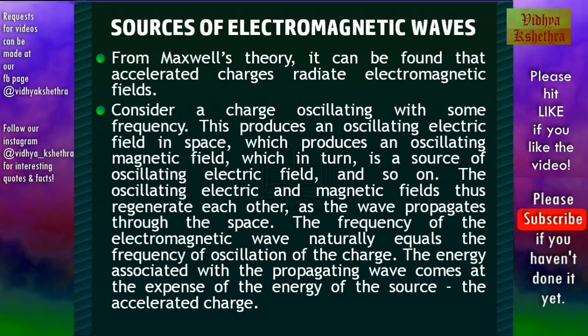Consider a charge oscillating with some frequency. This produces an oscillating electric field in space, which produces an oscillating magnetic field, which in turn is a source of an oscillating electric field, and so on. The oscillating electric and magnetic fields regenerate each other as the wave propagates through space. The frequency of the electromagnetic wave equals the frequency of oscillation of the charge. The energy associated with the propagating wave comes at the expense of the energy of the source, which is the accelerated charge.